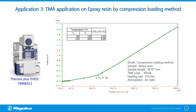This figure shows the compression loading measurement result of epoxy resin. The sample presents an expansion curve with a slope change at 112 degrees centigrade due to glass transition. Comparing the CTE at 50 degrees centigrade before glass transition and at 150 degrees centigrade, the CTE value increases nearly three times after the glass transition temperature.